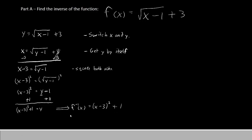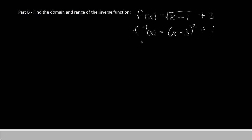This f negative 1 of x is usually read as f inverse. This is likely to be how they want you to state the answer. Now that we have f inverse, Part B will be to find the domain and range of the inverse function. To do that, we are actually going to start from the original function: y equals the square root of (x minus 1) plus 3.